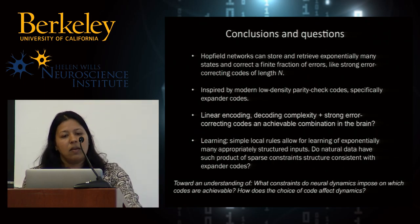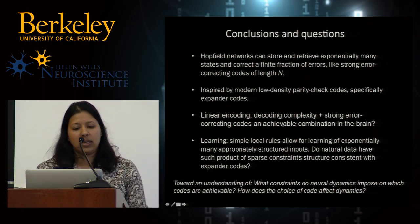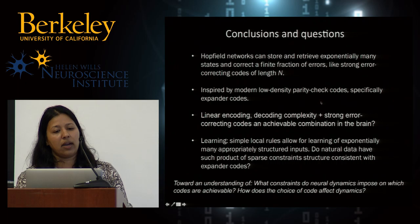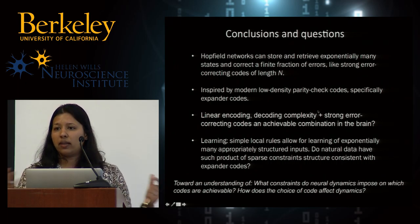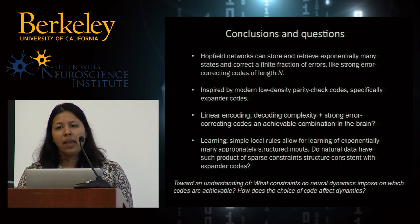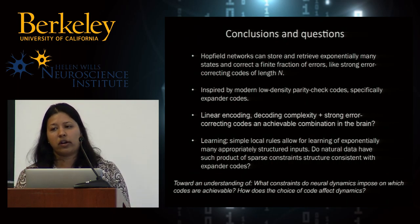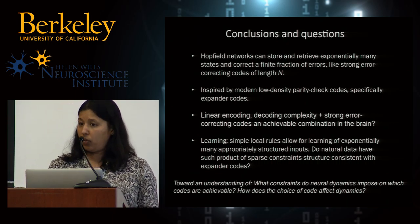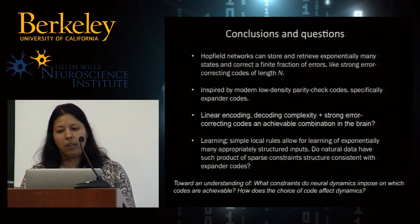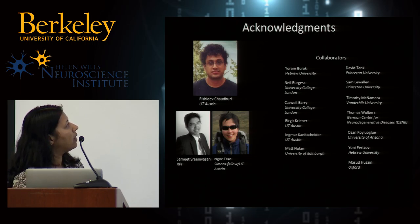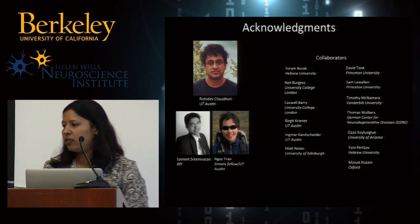Inspired by modern low-density parity check codes, we can construct these objects in high dimensional spaces and actually generalize them. Low-density parity check codes usually have a lot of structure, but some of these constructions here allow relaxing much of that structure while still retaining the properties. The second half of this work was done by Rishi Chaudhary from my group, and the first half was done by Samit Trinovasan. Thank you very much for your attention.